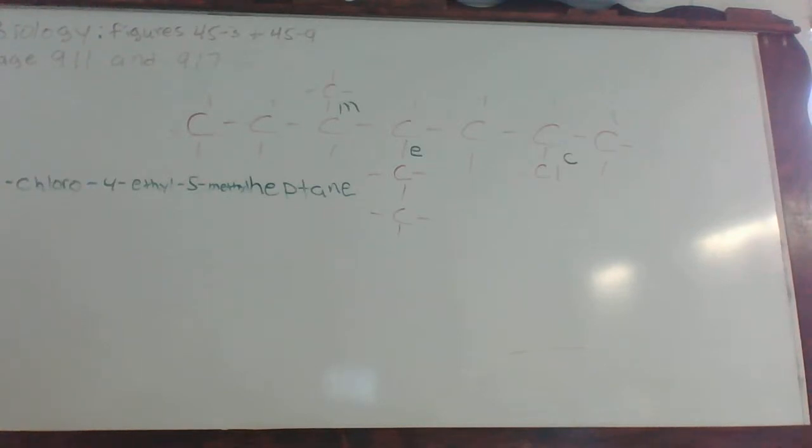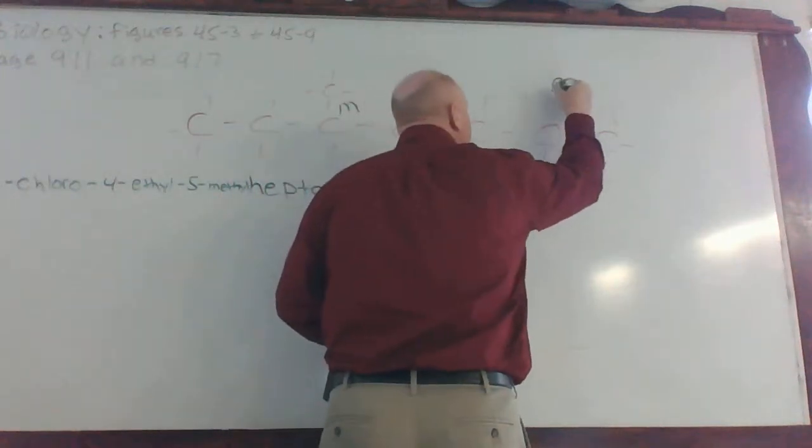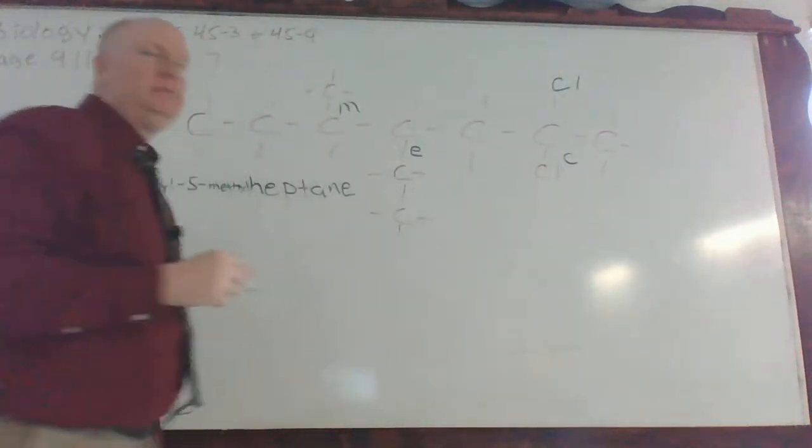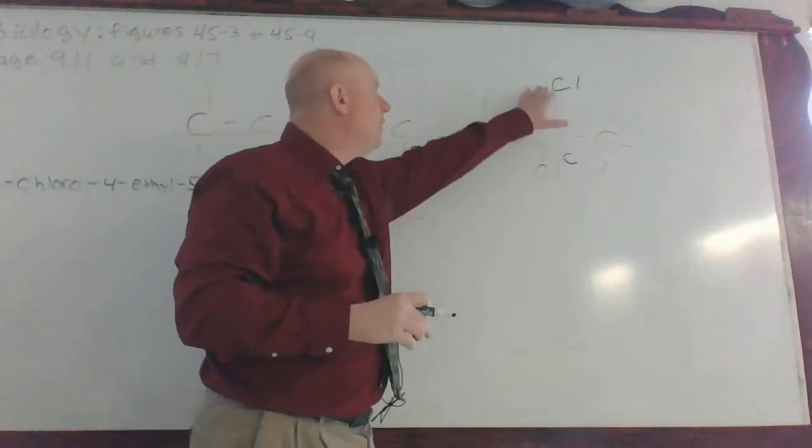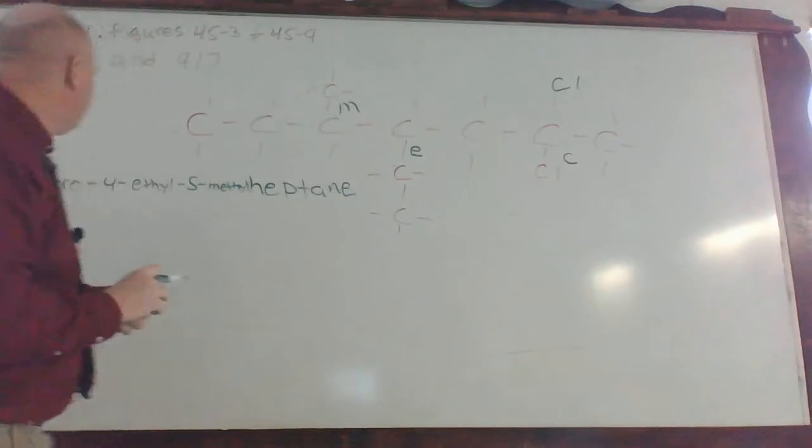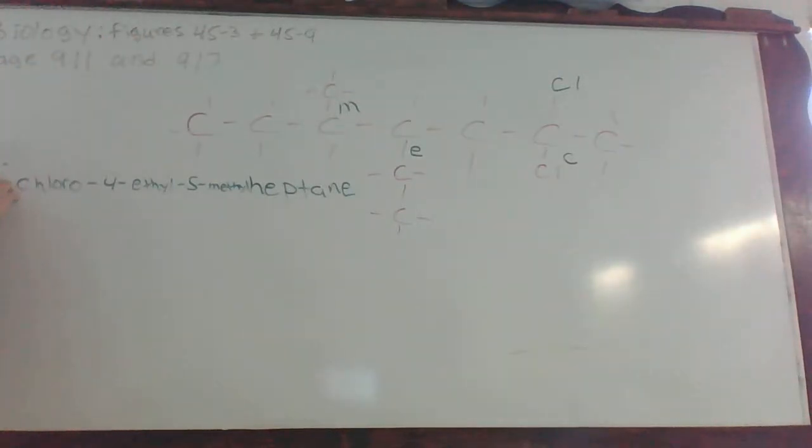So what about if we put that up top? We've got to change the name just a little bit. Two, two, because there's two of them. There's one below and there's one above. So two, two dichloro. And if there's another chloro group on there, then you call it trichloro. We see that pattern.